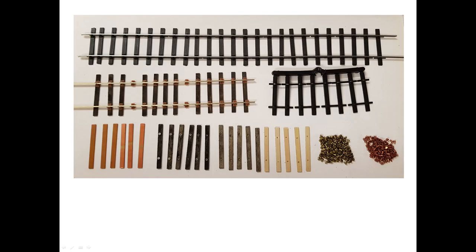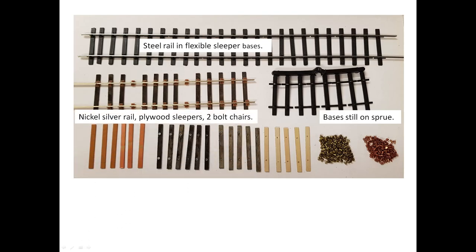This photograph shows the materials that I have used, most of which are available from the Scale4 stores. For straight track in the fiddle yard and on other parts of the layout outside the planned scenic section, I've used C&L flexible sleeper bases. In the scenic section, I'm building track with two bolt functional exacto scale chairs glued to stained plywood sleepers with butanone solvent.